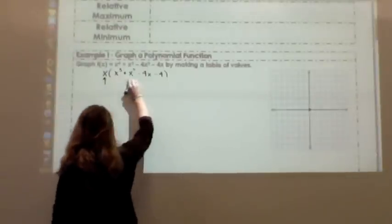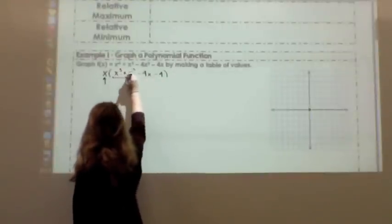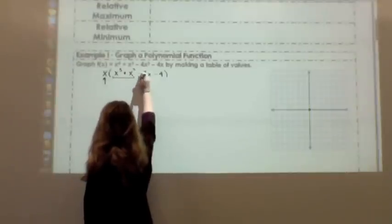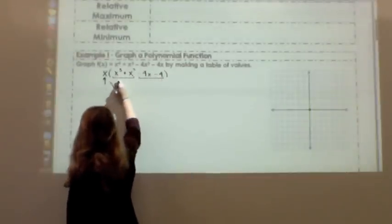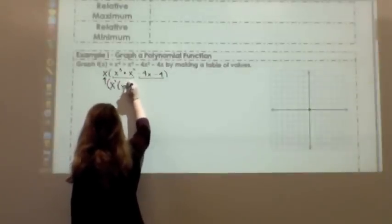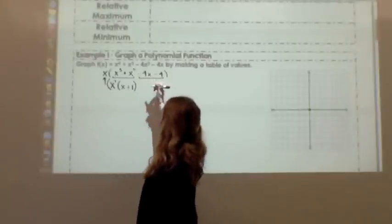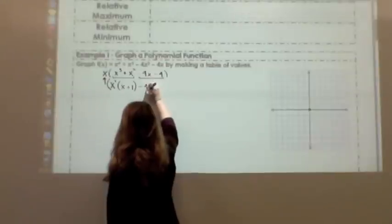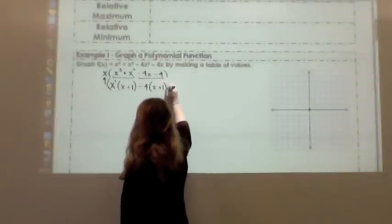Now I'm focusing in on this quantity here, and there are four terms, so actually I'm going to use grouping to factor it. I'm going to pair together the first two and the last two. Looking at my first pair, their common factor is x squared. I'm going to factor that out, leaving me with an x plus 1. And my second pair has a negative 4 in common, so I'm going to factor that out, and I'm going to have an x plus 1.